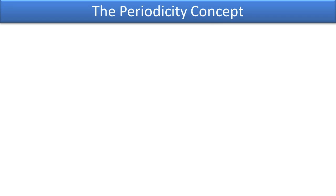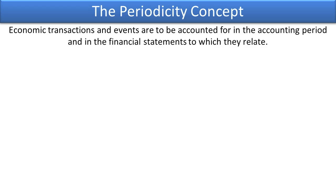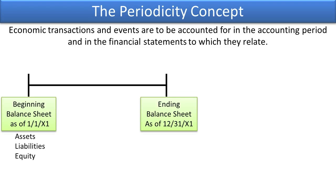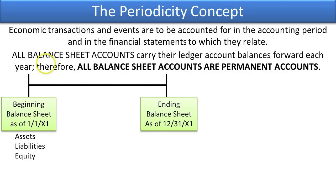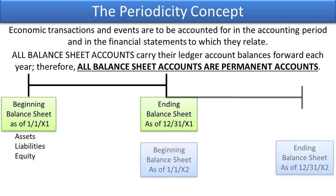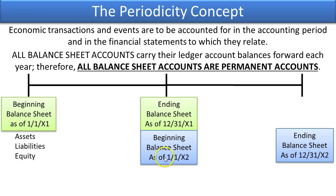The reason we do this is because of the periodicity concept. Economic transactions and events are to be accounted for in the accounting period and in the financial statements to which they relate. With the balance sheet, it is reported as of a given point in time — beginning or end of the year. All balance sheet accounts carry their ledger account balances forward each year. Therefore, all balance sheet accounts are permanent accounts: assets, liabilities, and equity. Whatever the ending balance is at the end of one year will become the beginning balance at the beginning of the next year.